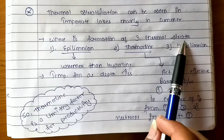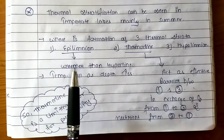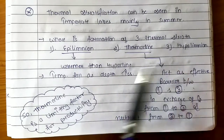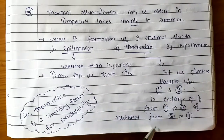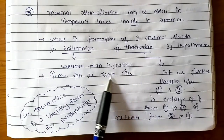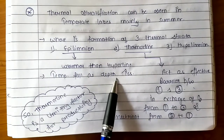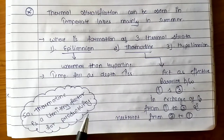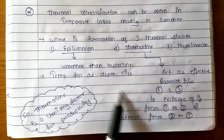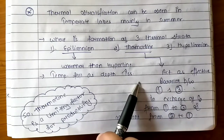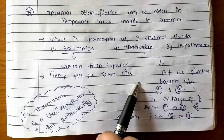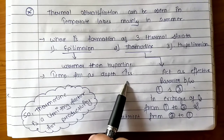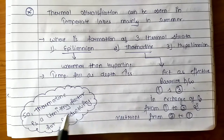In temperate lakes we have 3 types of strata: Epilimnion, Thermocline, and Hypolimnion. Temperature varies greatly due to restricted exchange of oxygen and nutrients. Temperature falls as we go deeper. The thermocline is a limiting factor for productivity — because of the thermocline, temperate lakes are less productive than tropical lakes.